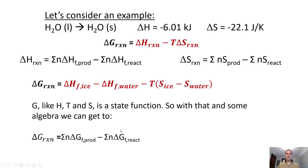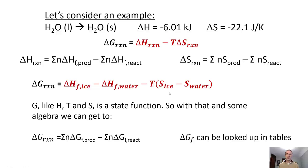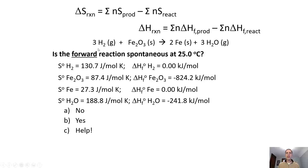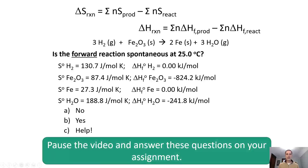This is useful because we can look these delta G of formation values up in tables — much like we've seen with delta H of formations and entropies. That way we can calculate these things without having to do the experiment. So let's take this for a spin. Here we've got hydrogen gas reacting with iron oxide to form iron and water. The question is: is the forward reaction spontaneous at 25 degrees Celsius? We have the entropy and enthalpy information for each compound, so give it a try.